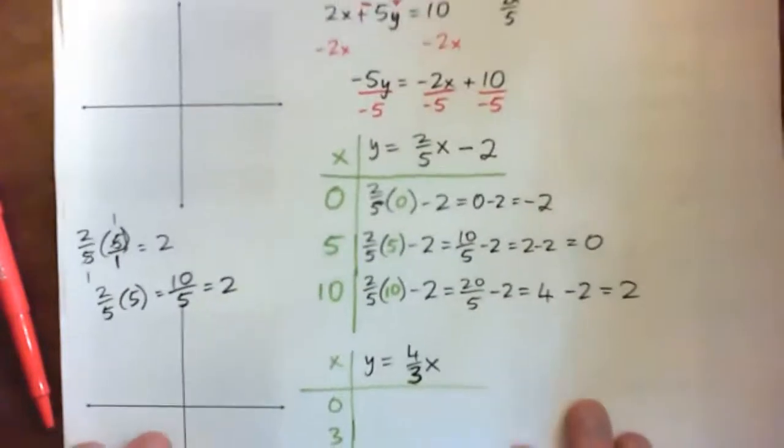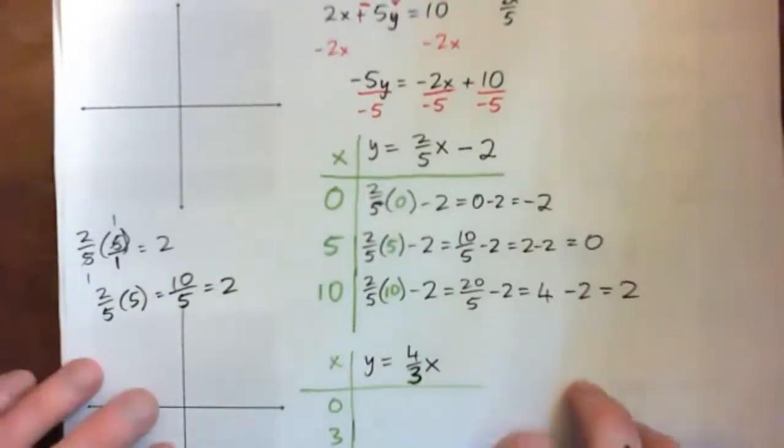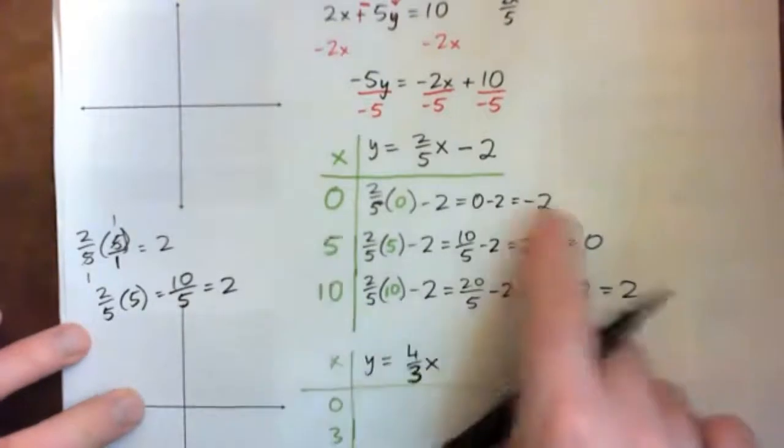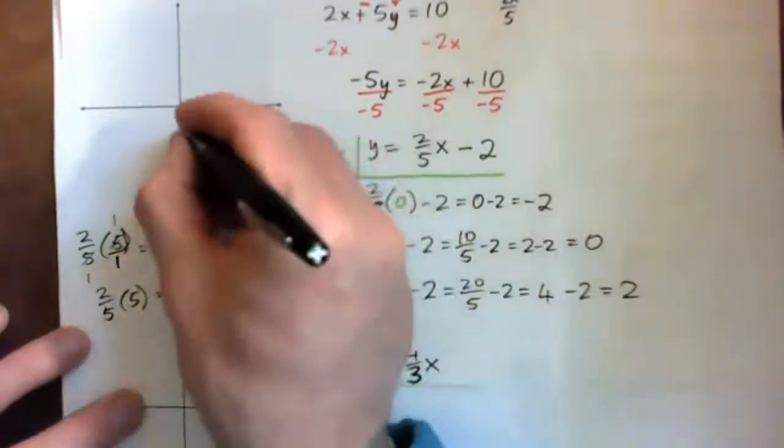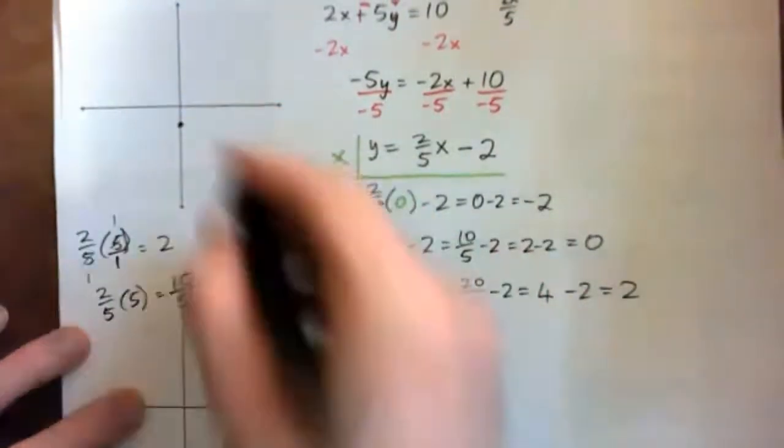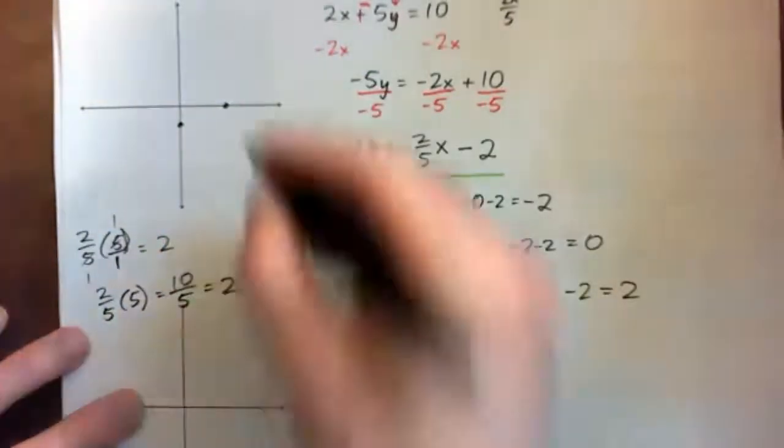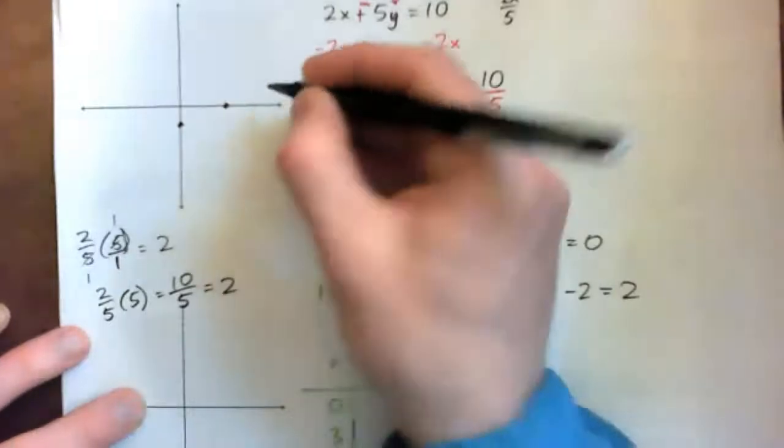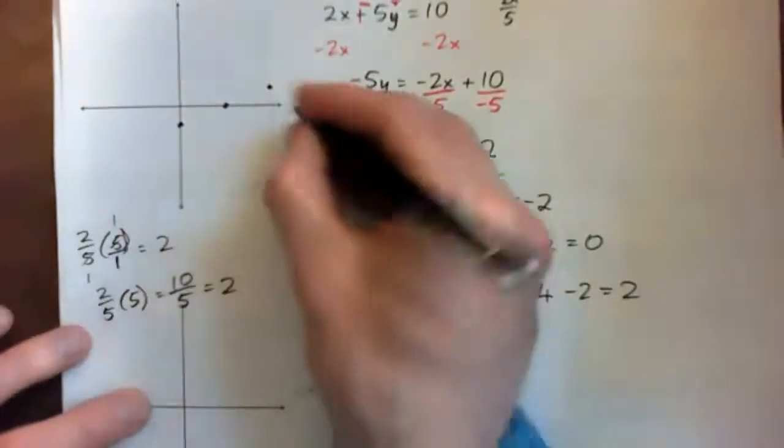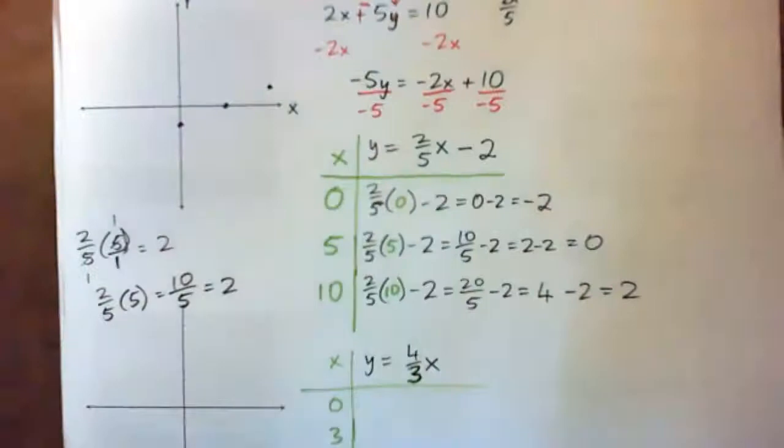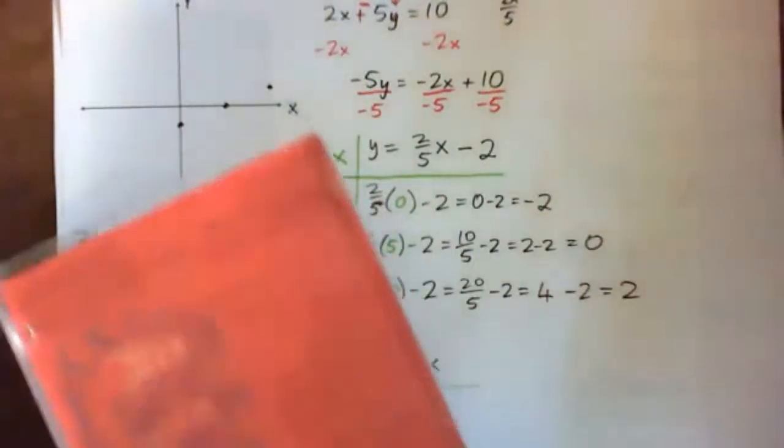So, now we've got to plot the points. 0, negative 2, 5, 0, 10, 2. And this is my x-axis, my y-axis. And then draw a line through it.